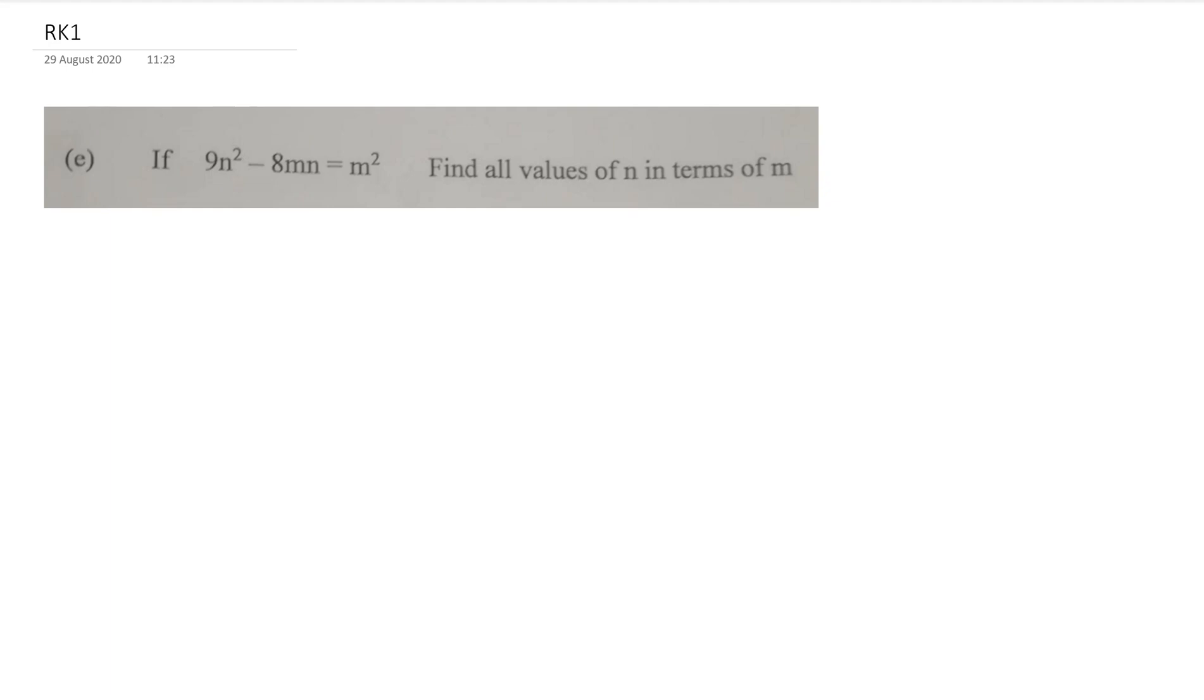Alright, so let's get going with this question. We have a quadratic equation and it says find all values of n in terms of m. The first thing I want to do is write this as a quadratic equation, so I'm going to write down 9n² minus 8mn.